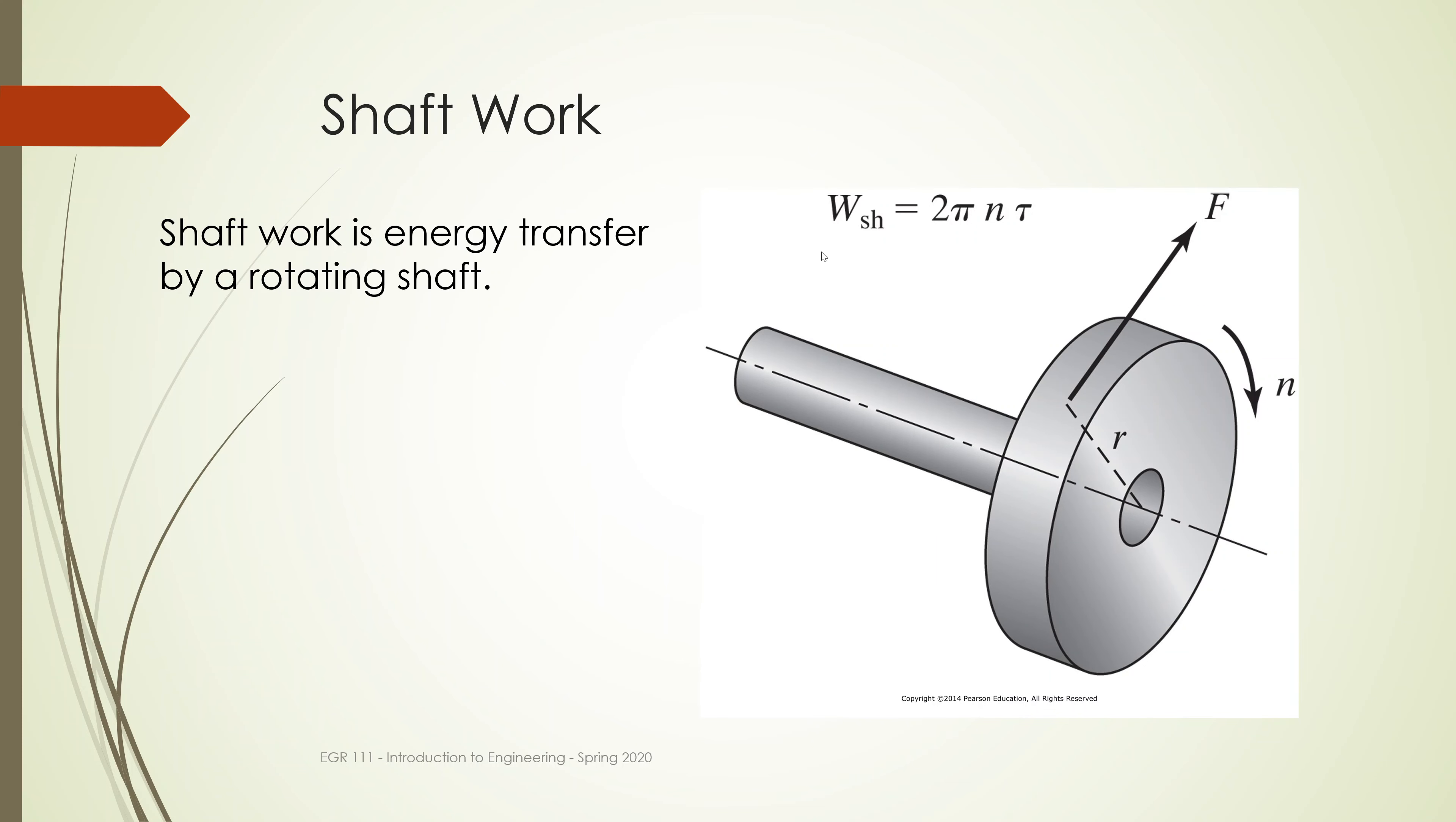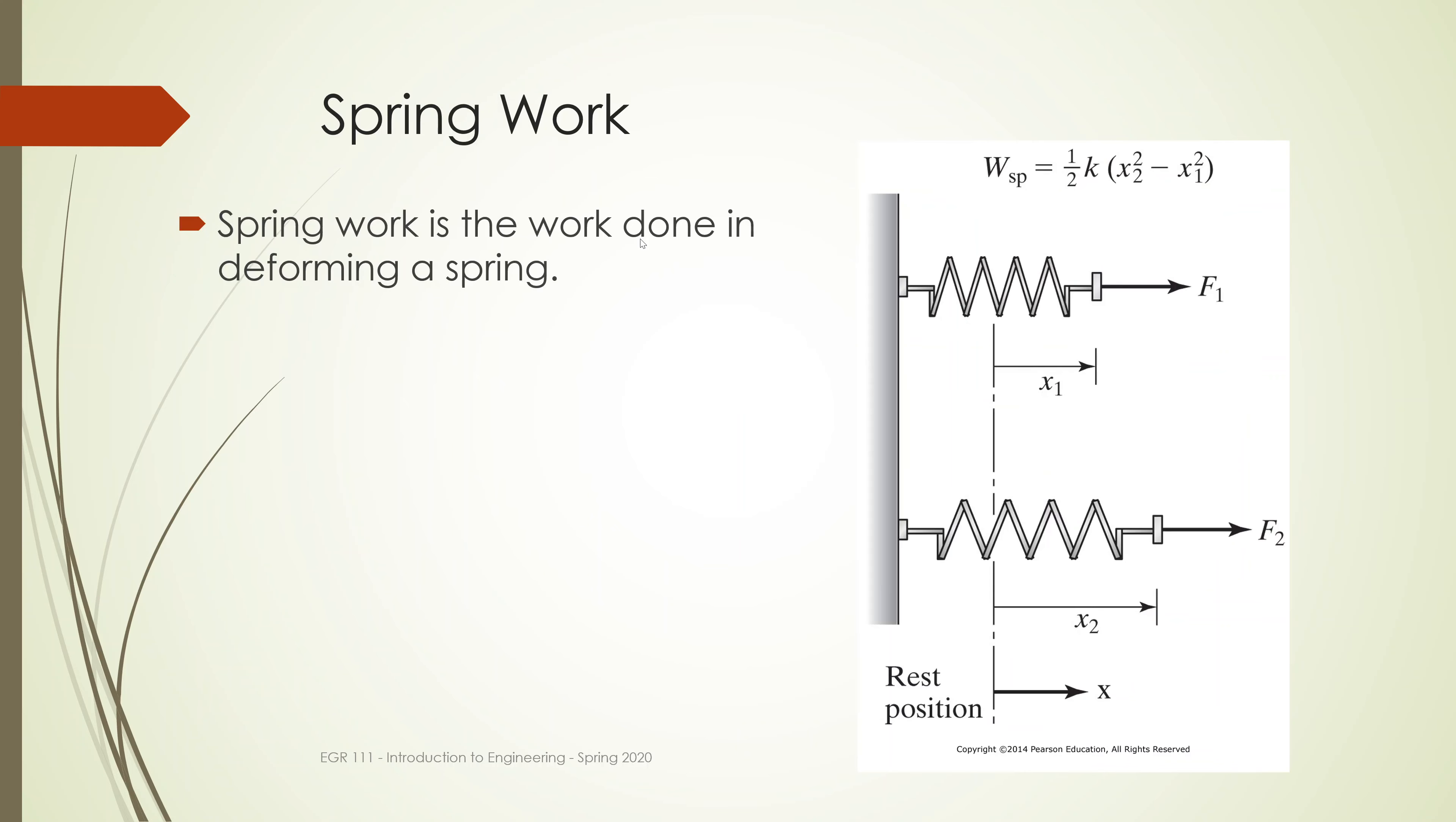Shaft work is work done by the rotation of a shaft. The basic idea—if you look at this equation, you'll see 2π times the radius. This n is the number of rotations, and this is the torque. It tells you how much work is done. Torque is force times distance, so tau is force times distance, and n is how many times it's rotated around.